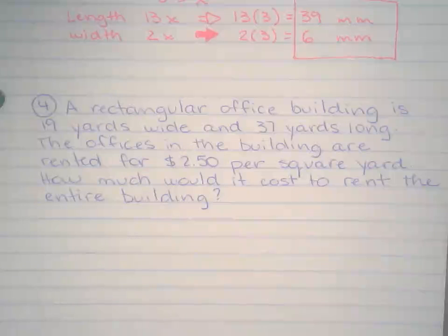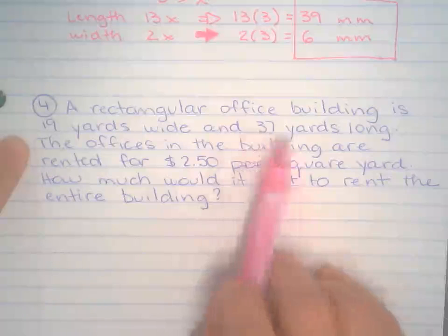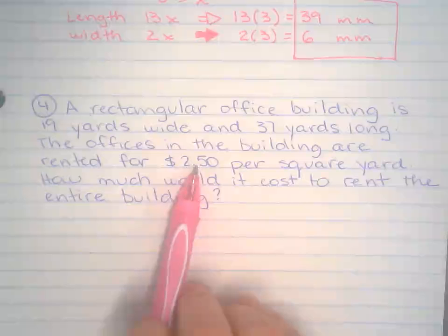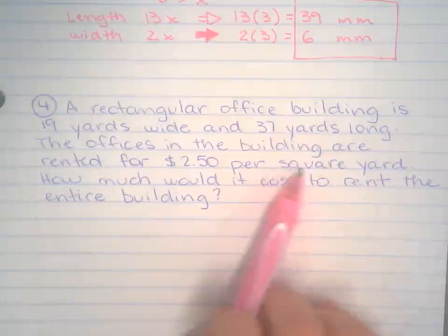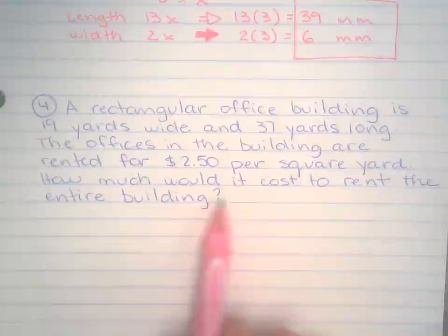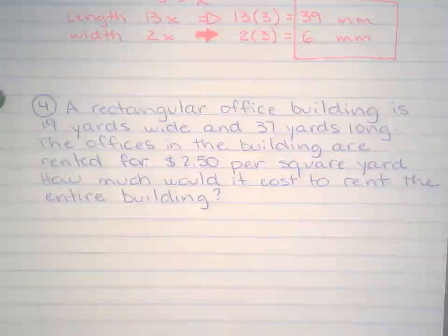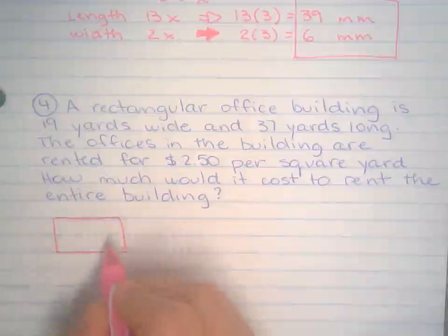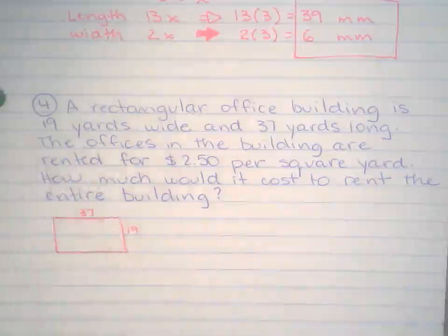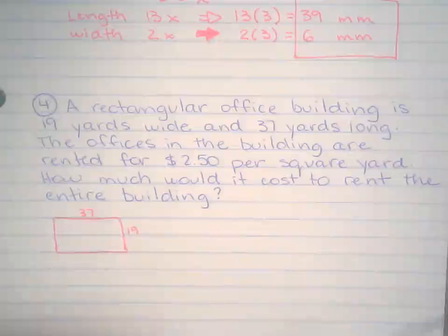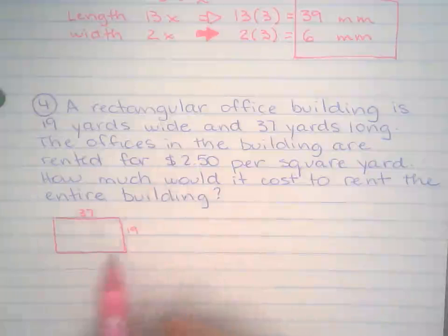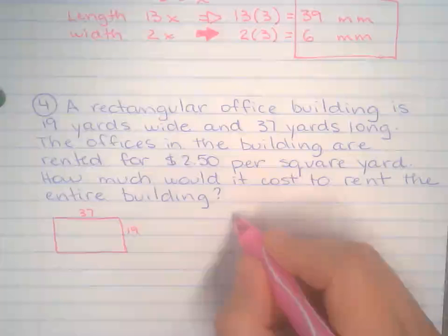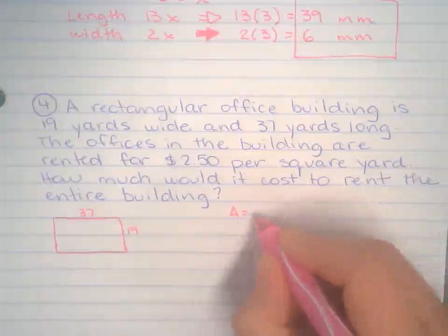Last one. We have a rectangular office building. It's 19 yards wide by 37 yards long. So, it's a rectangle. It says right there. The offices in the building are rented for $2.50 per square yard. So, that rings a bell. That's talking about area. How much would it cost to rent the entire building? So, we have a cute little rectangular building right there. That is 19 by 37. And square yards mean area. So, the first thing I'm going to do is that it has to do something with area. So, that's what I'm going to find first. I'm going to find the area of this building. So, find the area by multiplying length times width. So, 37 times 19.